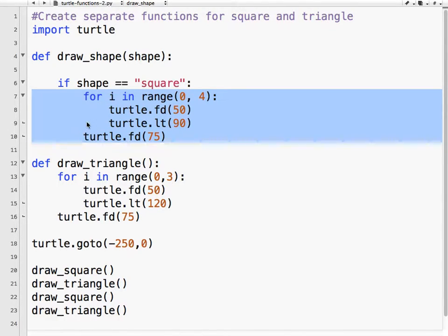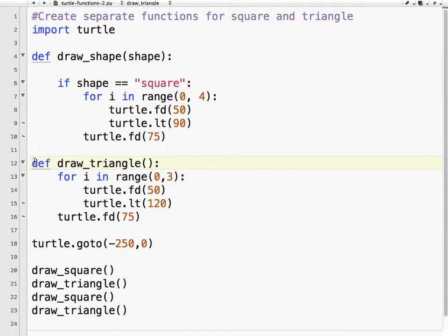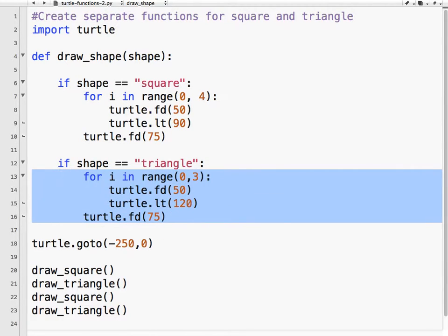I'm going to draw my square. Okay, and then here, what I'll do is go if shape equals triangle. Same code, I'm going to draw my triangle.